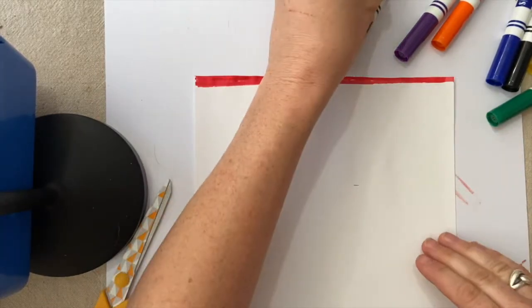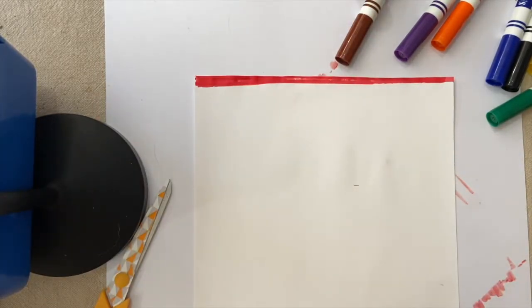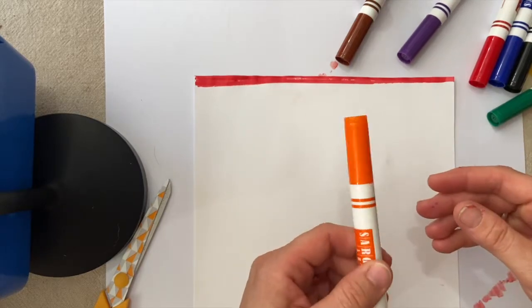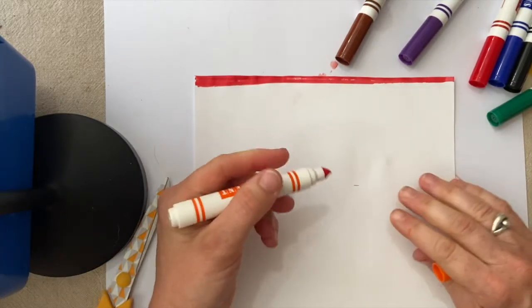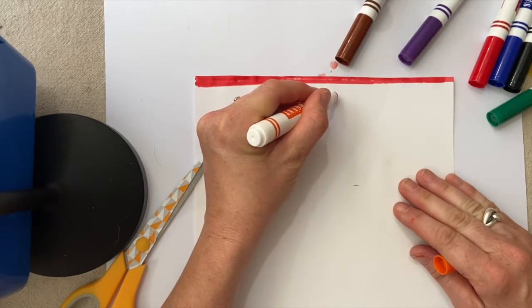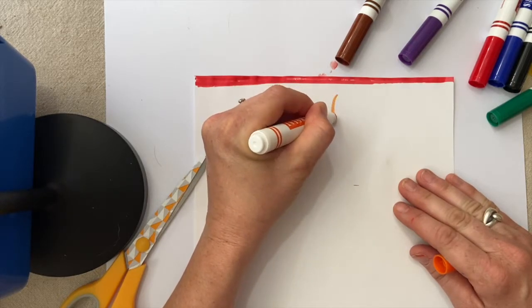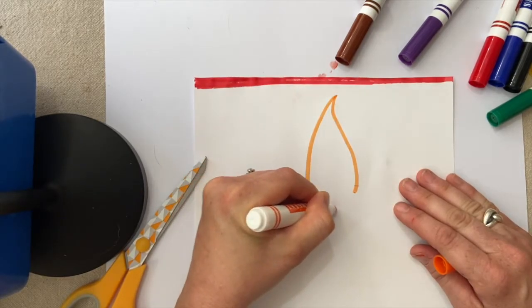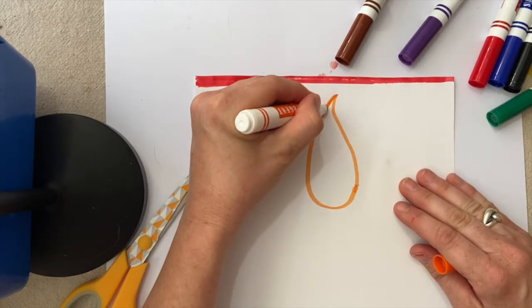Let's start with the orange color. Find your orange marker. We're going to draw the largest of the three flames. Looks a lot like a teardrop. We put a little curve at the top and then another one on the left side and they meet down at the bottom there.